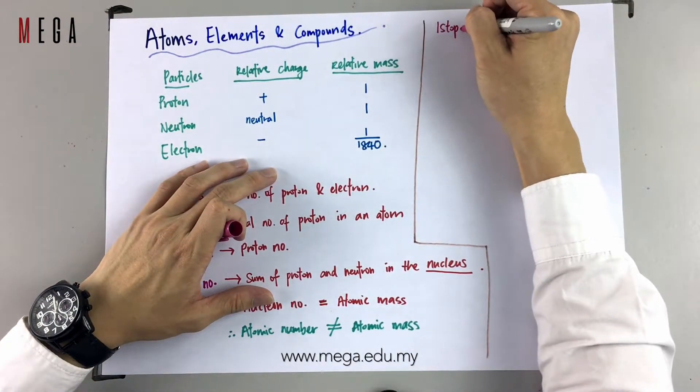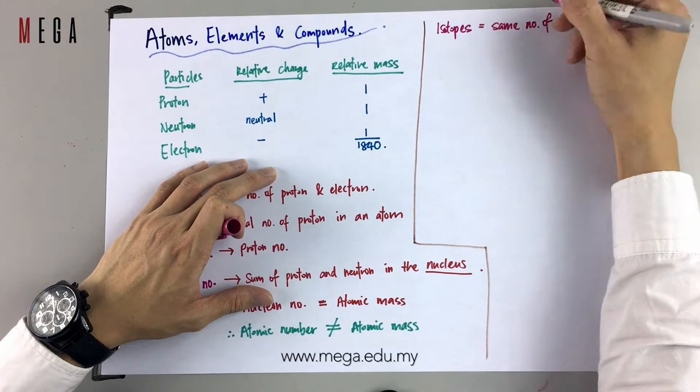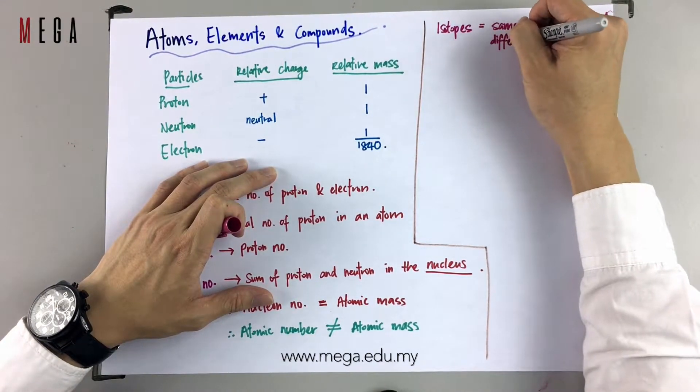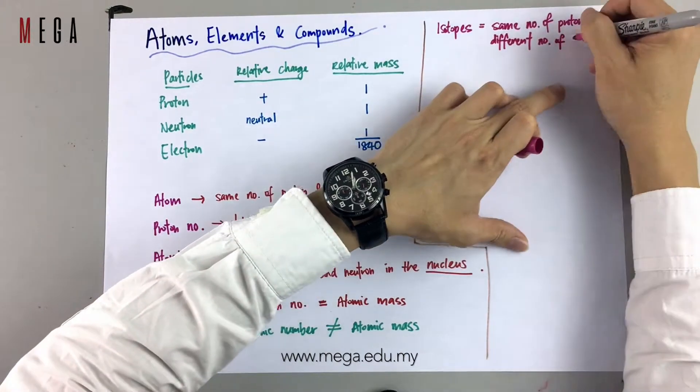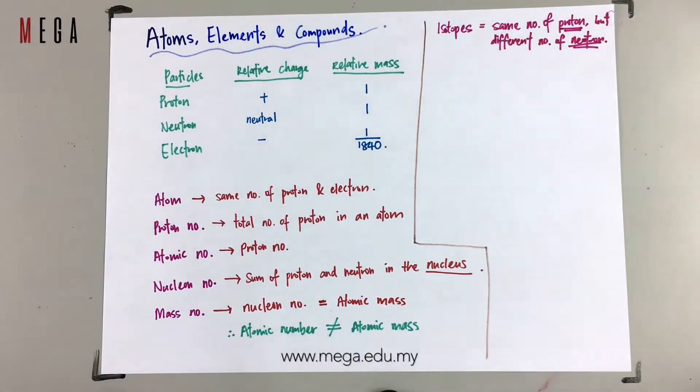Next, moving on to isotopes. What are isotopes? Isotopes are substances that have the same number of protons but different numbers of neutrons. Remember, same proton number but different neutron number.